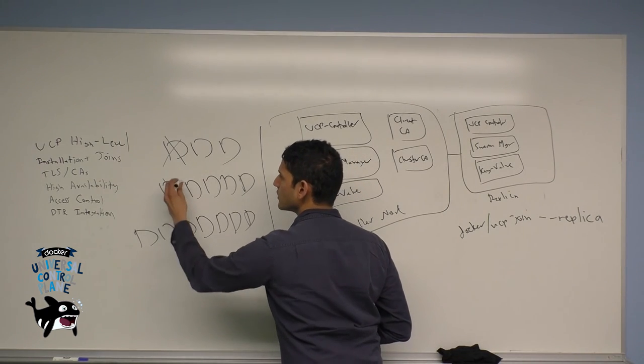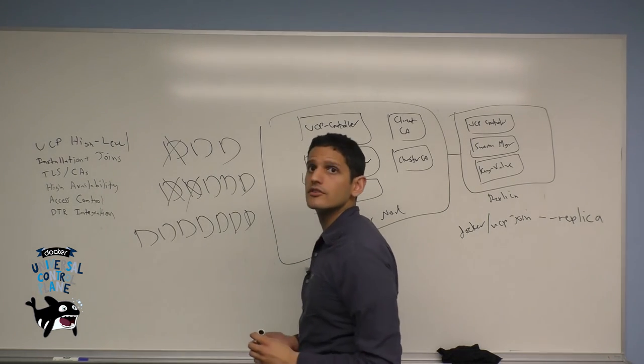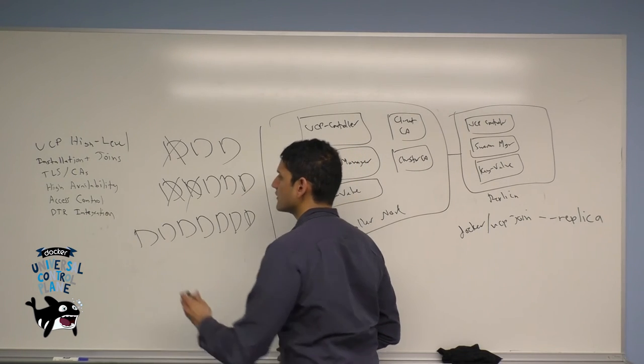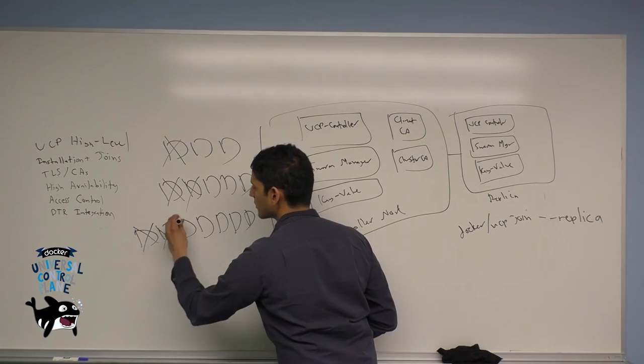In the case of a five node cluster, you're able to tolerate two failures. In the case of a seven node cluster, you're able to tolerate three failures.